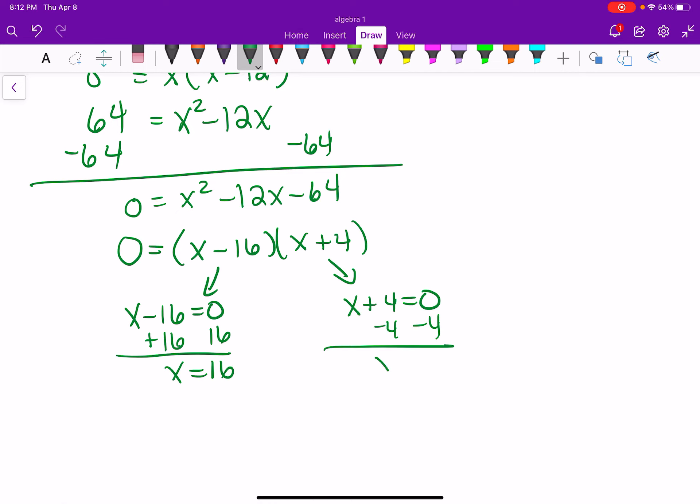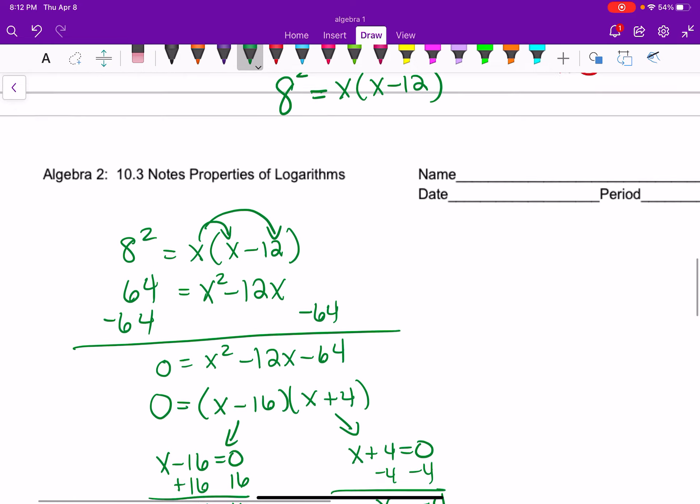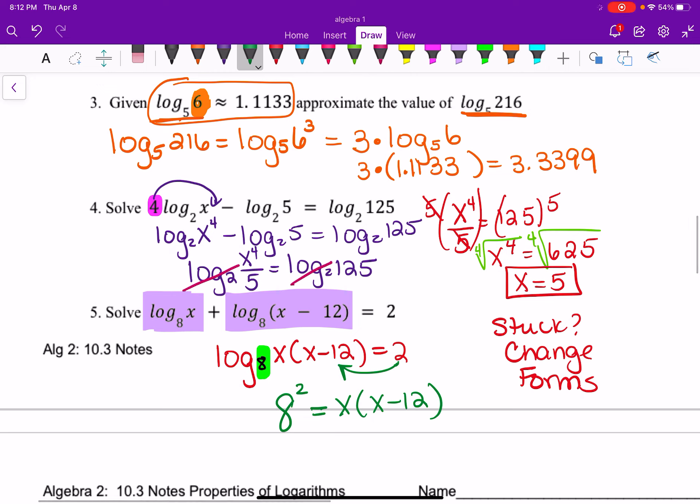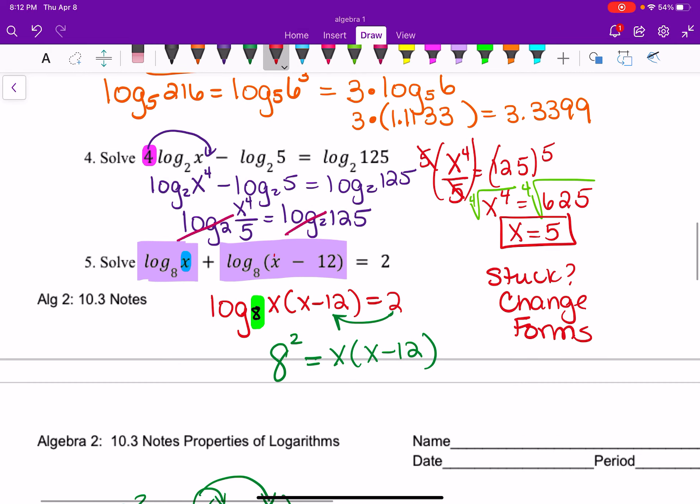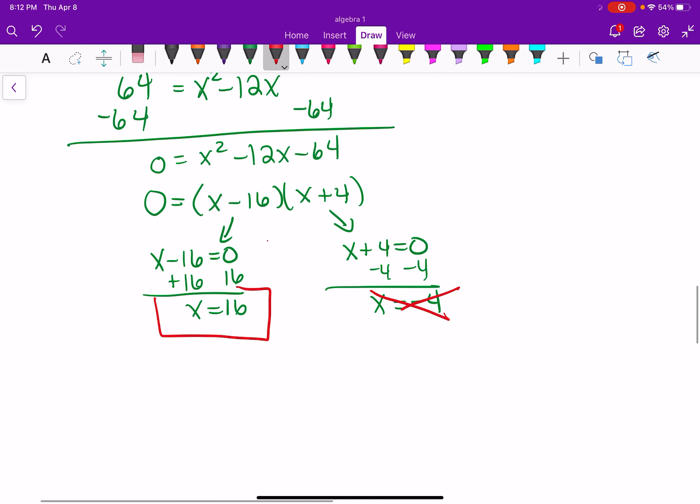Now be careful, go back and check to make sure we're not taking the log of a negative. So if you go very back to the very beginning of this problem, we have a log of x here. So because of that x there, log cannot be negative. So that x cannot be negative. I also want to check to make sure if I put 16 into it, that we're not taking a negative. So I go back up here and I put a 16 here. Well, 16 minus 12, that's positive. So we're good. So the only answer is x equals 16.